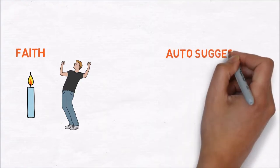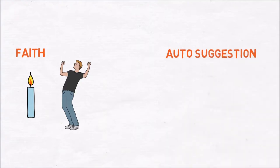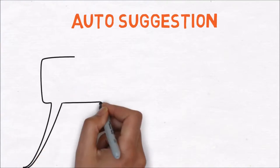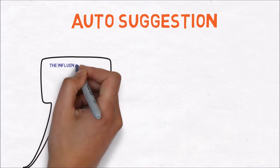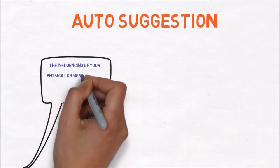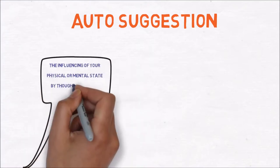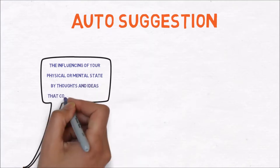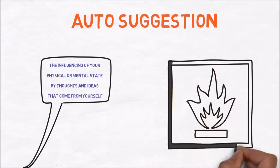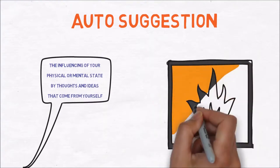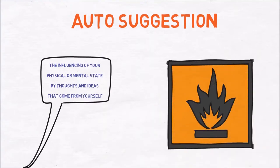The third step is auto-suggestion. Auto-suggestion is the influencing of your physical or mental state by thoughts and ideas that come from yourself. Use the six steps you've made in the first step and repeat these sentences out loud. Changing your desire to reality requires sending your subconscious mind phrases and mantras that support your goal. Your ability to use auto-suggestion depends on your capacity to concentrate upon a certain desire until the desire becomes a burning obsession.